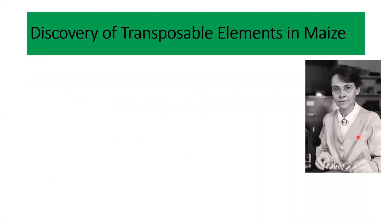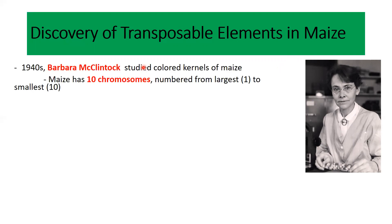Here is a scientist — her name was Barbara McClintock. She was working on the maize plant, which we generally use for eating, and she was trying to understand some unusual phenotypes of maize plants in the 1940s. Maize has 10 chromosomes named according to their size: the largest is chromosome 1 and the smallest is chromosome 10.